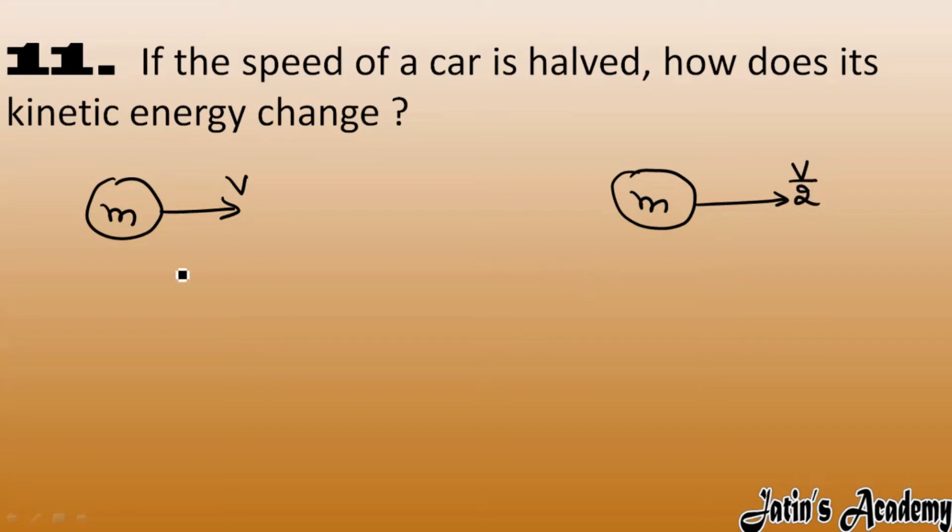For example, initially kinetic energy we have half mv square. And final kinetic energy, which is represented by k dash, is half m times v by 2 square.